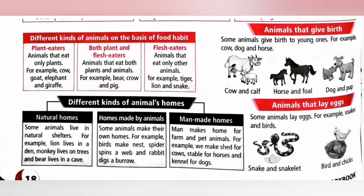Animals that give birth to young ones are also known as mammals, for example cow, dog, and horse.